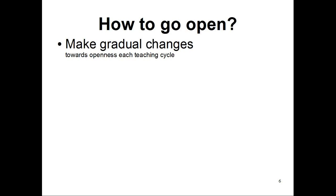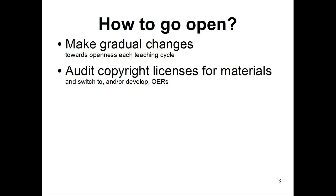How to go open? First of all, make gradual changes. Each teaching cycle, look at one aspect of the teaching that can be made open. This can involve looking at the copyright licences for all teaching and learning materials and gradually switching over to or developing open educational alternatives.